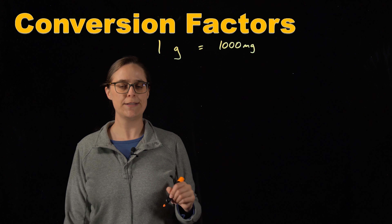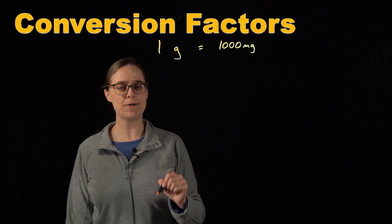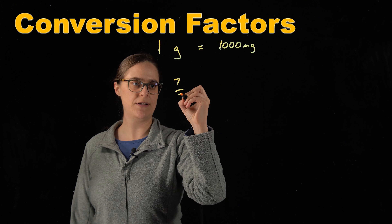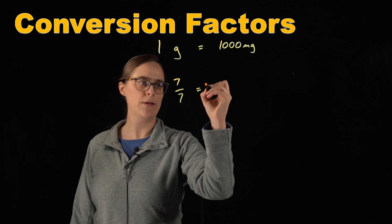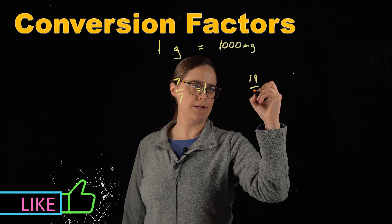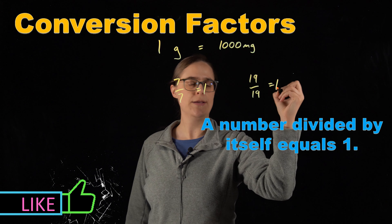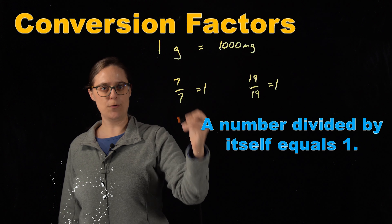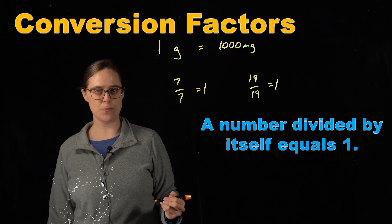First, let's think about what happens if you divide a number by itself. For example, 7 divided by 7 is equal to 1. Or 19 divided by 19 is also equal to 1. Whenever you have some value divided by itself, it's equal to 1.